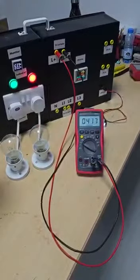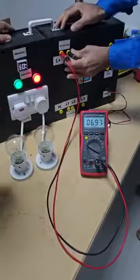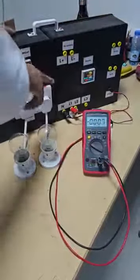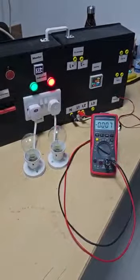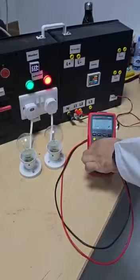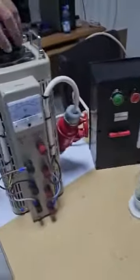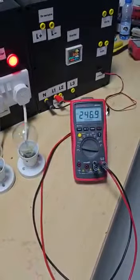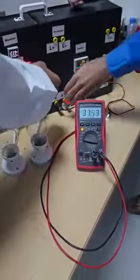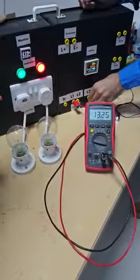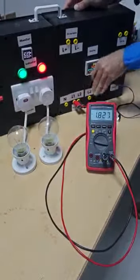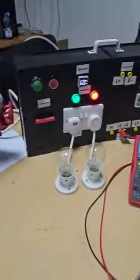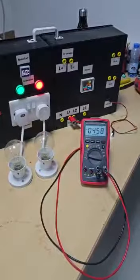We can get an AC output as single phase neutral to line, 240 plus volts, and from line to line we get a three phase AC 450 plus volts.